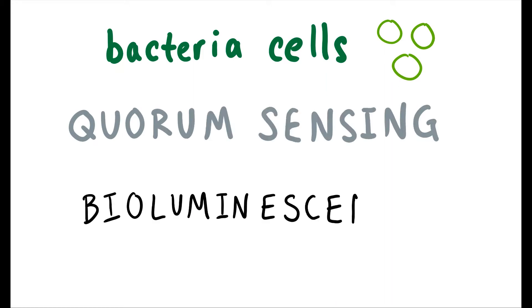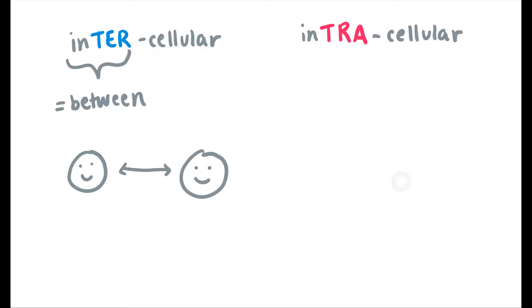Cells can participate in inter- or intracellular signaling. Inter- meaning between. Bacteria cells that utilize quorum sensing to become bioluminescent use intercellular communication. When they sense each other's closeness, they can communicate and will all glow together. To look at sweet taste, we will dive into intracellular signaling, within one of our taste cells.